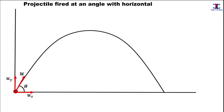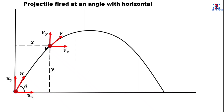Let u be the initial velocity with which a projectile is fired at an angle theta with the horizontal. Here, ux is the horizontal component of the velocity and uy is the vertical component. After some time the projectile reaches point B where the velocity is v, with horizontal component vx and vertical component vy. It must be noted that vx is equal to ux because the horizontal component of velocity is constant throughout the projectile motion.